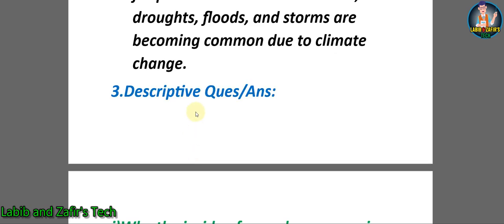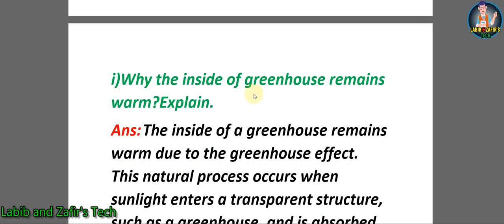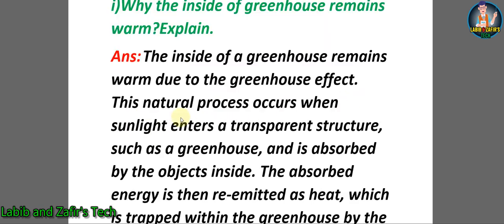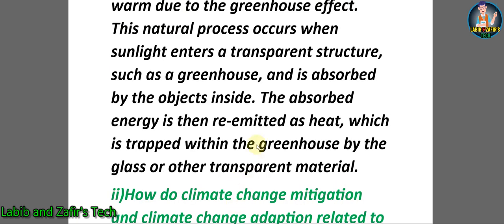Now students, let's go through some descriptive question answers. First question: why does the inside of a greenhouse remain warm? Answer: the inside of a greenhouse remains warm due to the greenhouse effect. This natural process occurs when sunlight enters a transparent structure such as a greenhouse and is absorbed by the objects inside. The absorbed energy is then re-emitted as heat, which is trapped within the greenhouse by the glass or other transparent material.